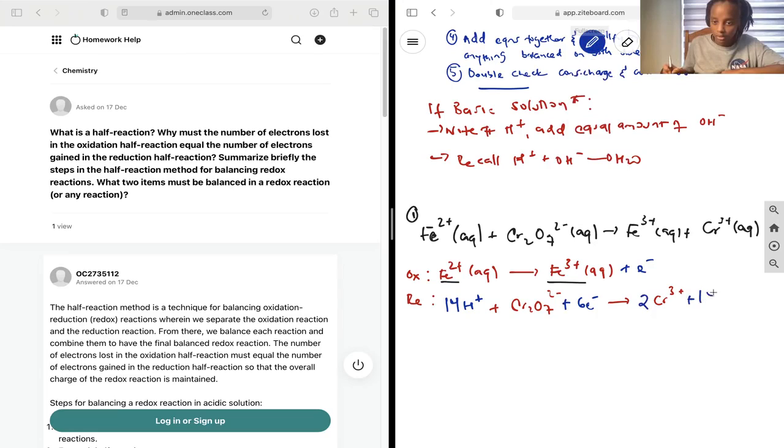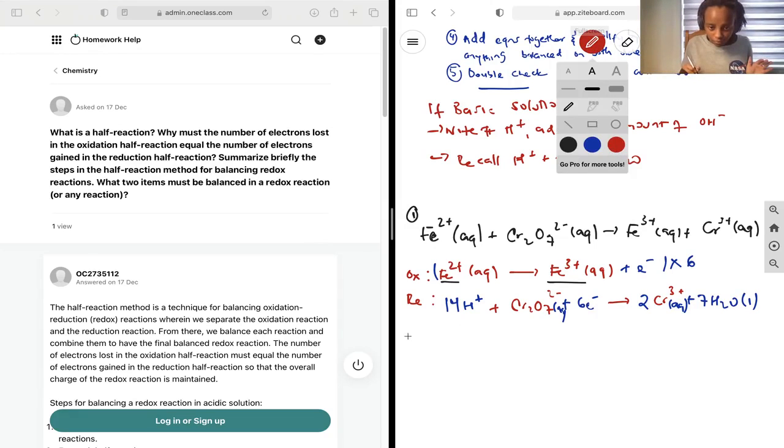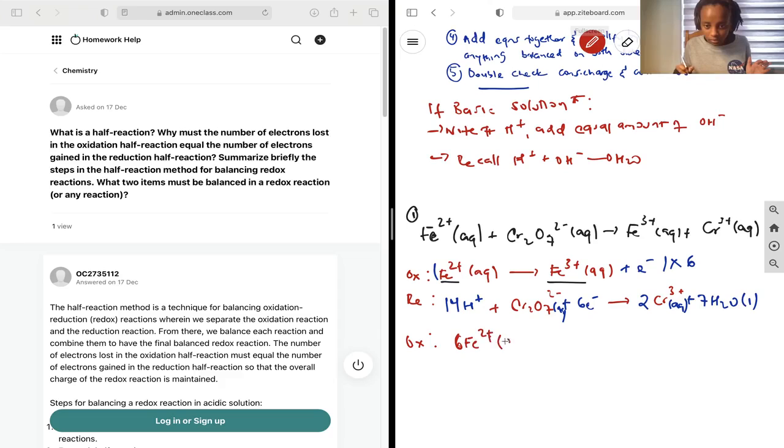Let's rewrite. 14H+ plus 6e- plus Cr2O7^2- to 2Cr3+ plus 7H2O liquid. Next, we have the charges balanced, mass species are balanced. We want the electrons added or removed to be equal, which means we will multiply this equation by 6 before we add it to the next one. 6Fe2+ to 6Fe3+ aqueous plus 6e-.